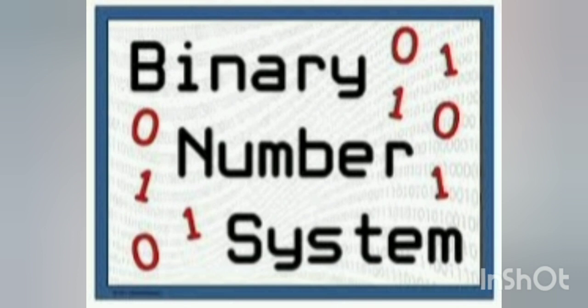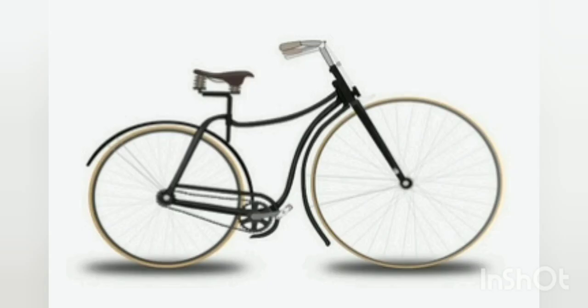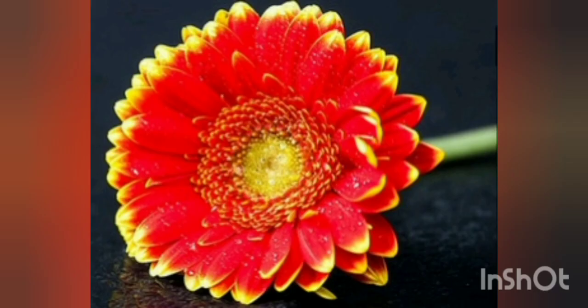Binary means composed of or involving two things. Bi means two. Can you think of anything that starts with bi? Bicycle, it has two wheels. Bicolor, it has two colors.